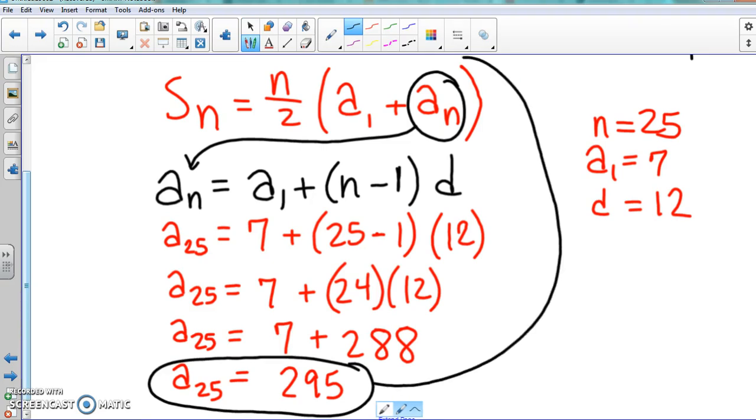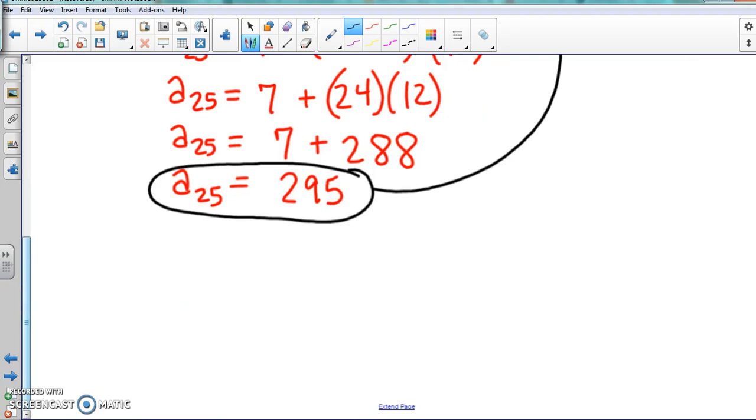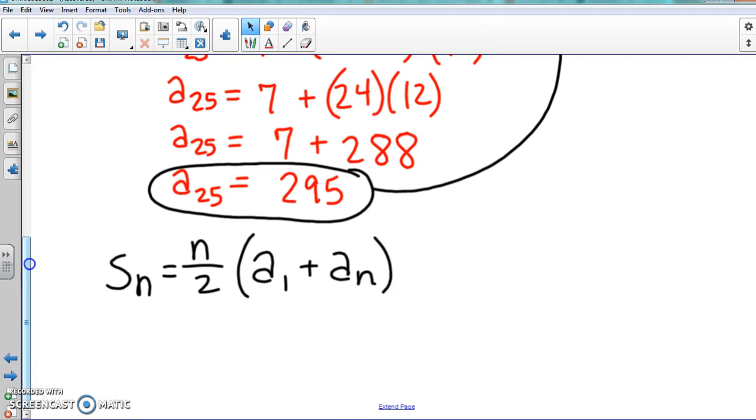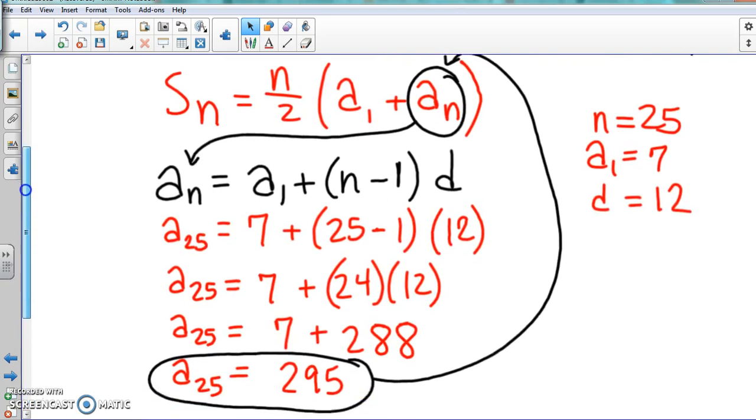We found what a_n is now, so all we have to do is now use that a_n that we found into that problem with our a_1 and our n, and we can find our answer. So let's go ahead and do our answer. Let's just write the formula for you one more time.